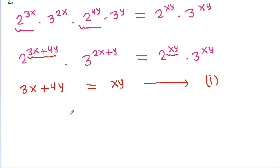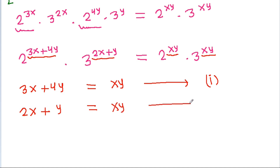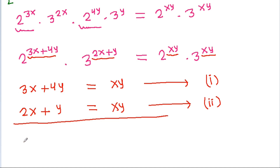And if we compare powers of 3, then we can get 2x plus y is equal to xy. Suppose this is equation 2. And if we subtract both equations, then 3x minus 2x is x, and 4y minus y is 3y, equal to xy minus xy which is 0. And we can get x is equal to minus 3y.